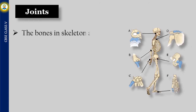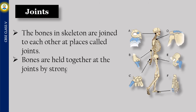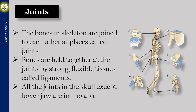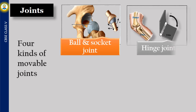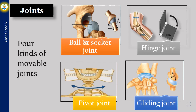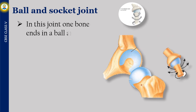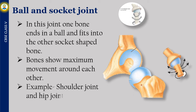The bones in the skeleton are joined to each other at places called joints. Bones are held together at joints by strong, flexible tissues called ligaments. All joints in the skull except the lower jaw are immovable. There are four kinds of movable joints in our body. In a ball and socket joint, one bone ends in a ball and fits into the other socket-shaped bone, allowing maximum movement. Examples: shoulder joint and hip joint.